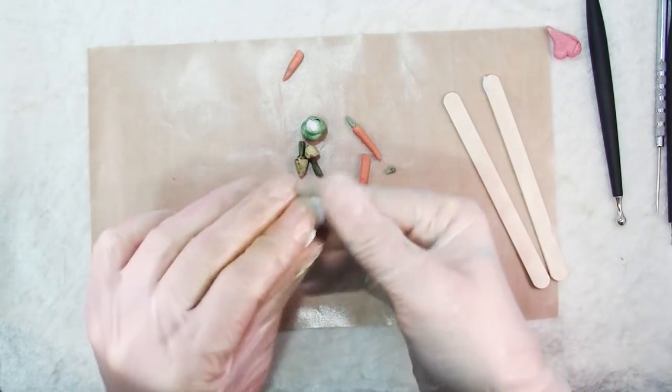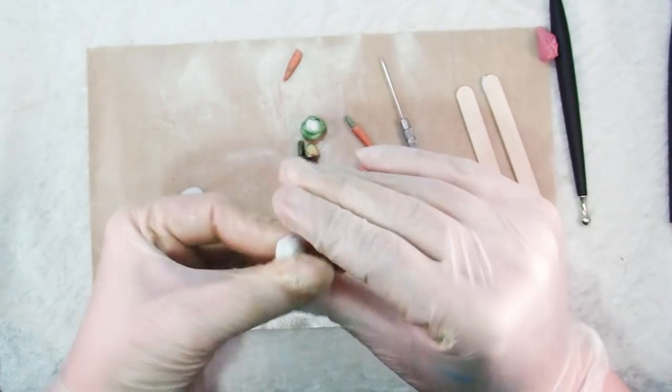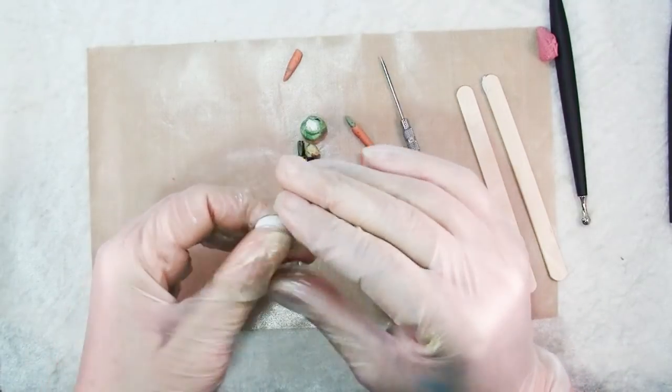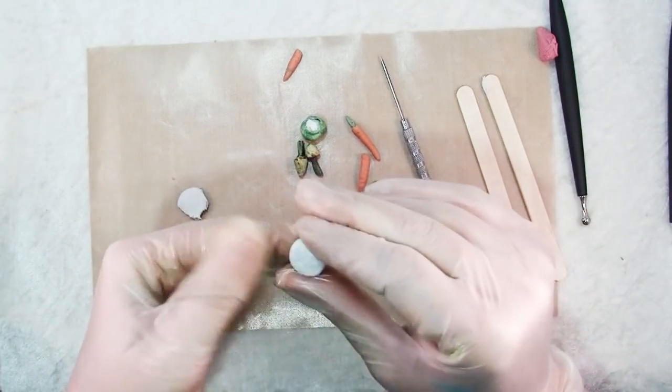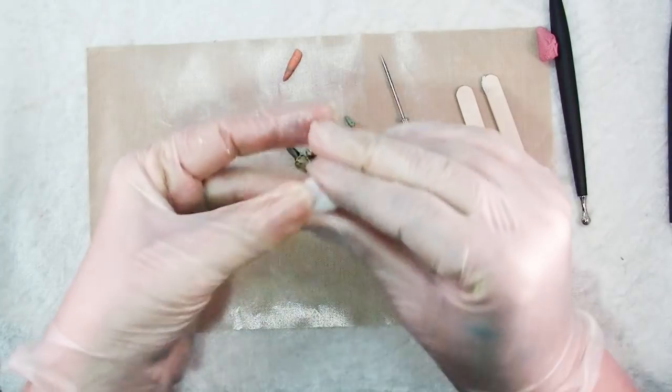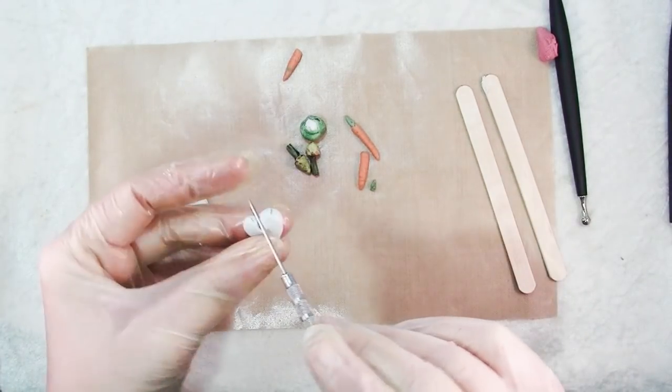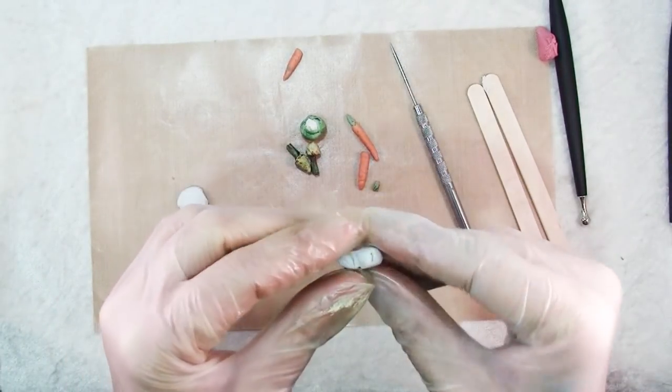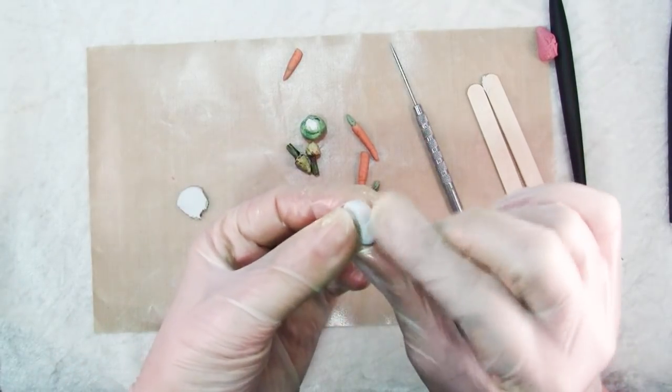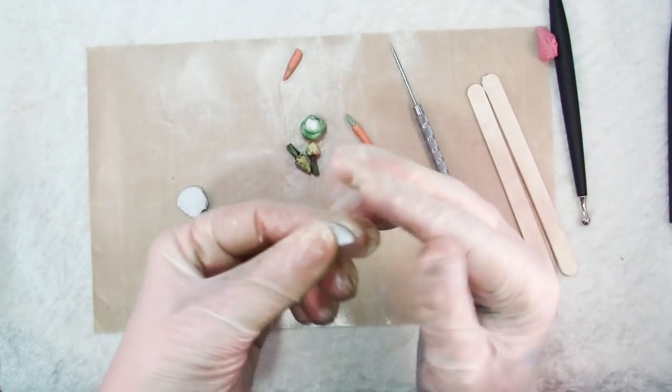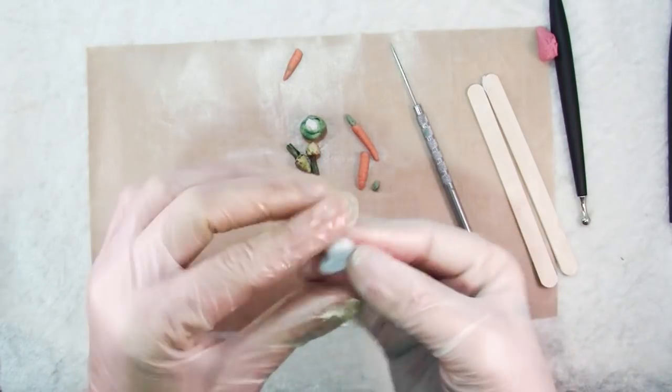One thing that's really convenient about epoxy sculpt is that it cleans up with soap and water. So for example, my gloves here, I'll actually go right to the kitchen sink, wash them thoroughly with soap and water and then be able to use them again. Now if you do a lot of sculpting with this, you may want to have dedicated tools for sculpting with epoxy sculpt. I just made sure that all of the tools I used I washed very thoroughly with soap and water before I put them away because otherwise this stuff is going to be rock hard and stuck to your pieces.